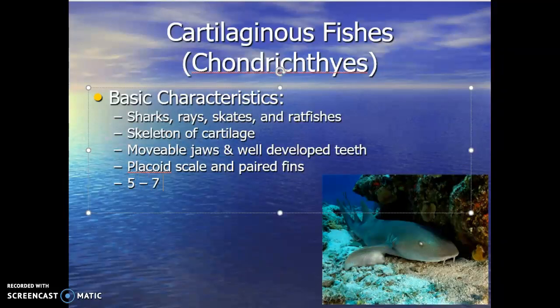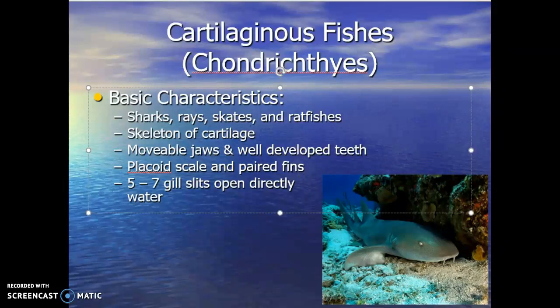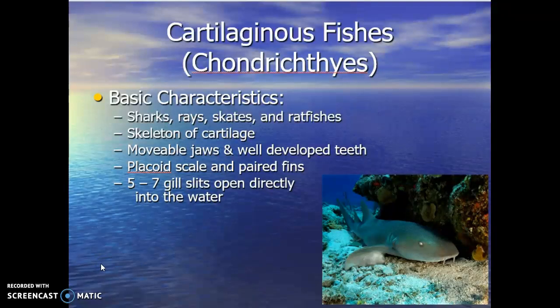Typically we see five to seven gill slits that open directly into the water. The gill slits are on the side of the shark and allow water to flow directly across the gills. Fish need water flowing across their gills for oxygenation. In research, when sharks are brought onto a boat, a tube is placed in their mouth to pump water across their gills to keep providing them oxygen. Stop moving a shark without water across those gills and the shark suffocates.